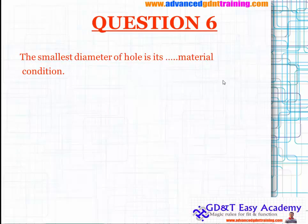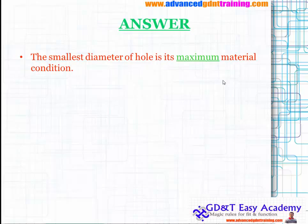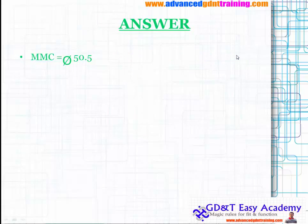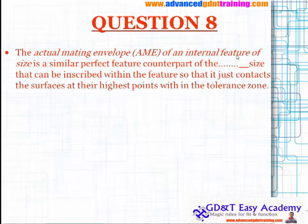Question six: the smallest diameter of a hole is its maximum material condition (MMC). For a shaft with a size of 50 ± 0.5, the MMC is 50.5 because at that size it will have the most material.